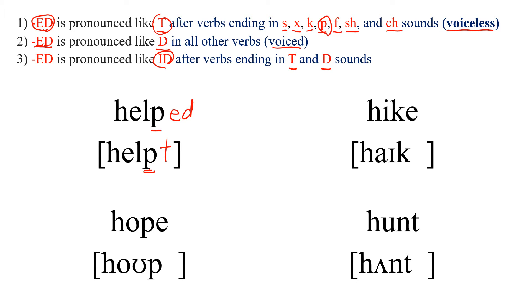Next one: HIKE. This is an E ending, so we just put D to make it past, and it has a K ending which is one of the voiceless sounds. So we use T and read HIKED.